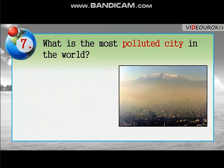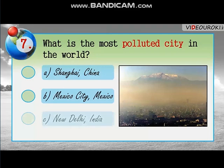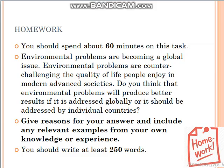Question number seven: What is the most polluted city in the world? A — Shanghai, China. B — Mexico City, Mexico. C — New Delhi, India. The correct answer is B — Mexico City.